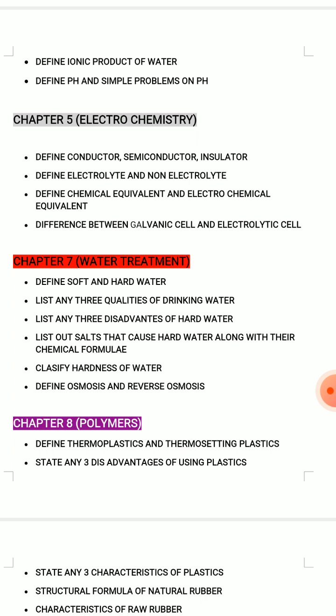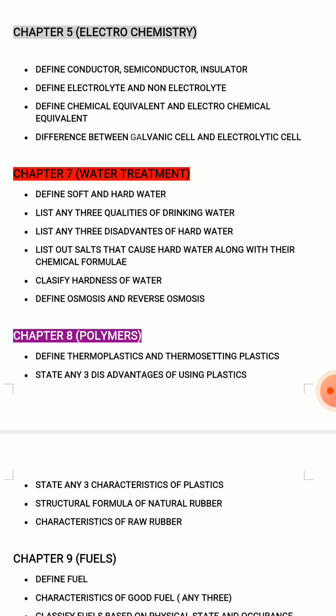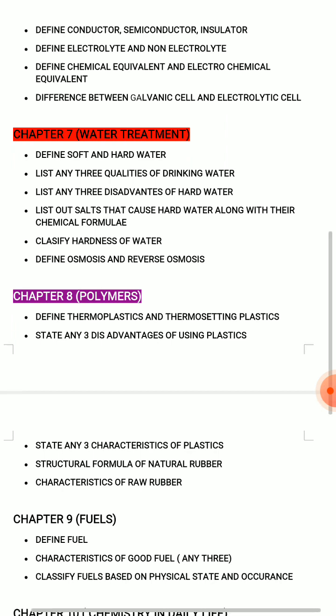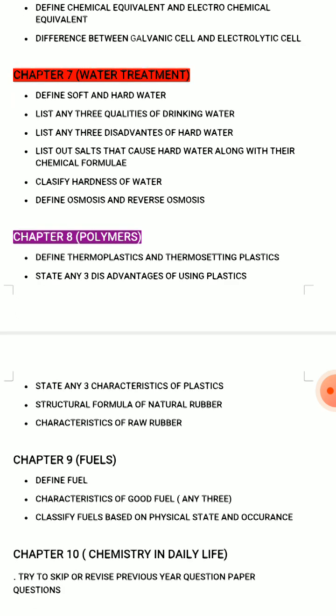So there is a difference between SA questions. Chapter 7: Water treatment for C20 students, that is C16 — Water Technology. The syllabus remains the same. Define soft and hard water — very important. List any 3 qualities of drinking water. List any 3 disadvantages of hard water. List out salts that cause hard water along with their chemical formula — very repeating important question. Classify hardness of water. Define osmosis and reverse osmosis. These are the important questions of Chapter 7.